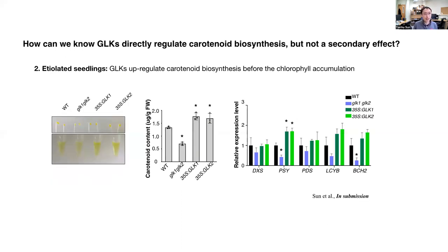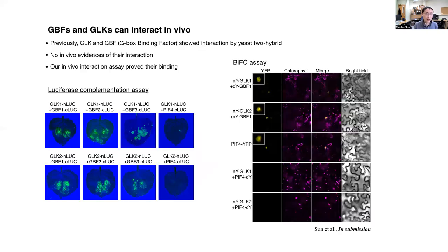The second scenario used etiolated Arabidopsis seedlings, where chlorophyll accumulation has not yet started. We found that GLK also regulates carotenoid accumulation in etiolated seedlings without chlorophyll accumulation. So now we know GLK directly regulates carotenoid biosynthesis. Previously, GLK was initially identified as G-box binding factor (GBF) interaction factor by yeast two-hybrid, but there was no in vivo evidence of their interaction. We performed a luciferase complementation assay and a BiFC assay and found that GLK transcription factors can interact with GBF transcription factors in vivo.